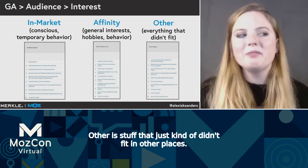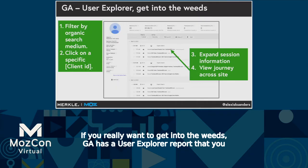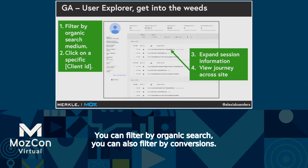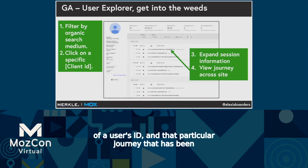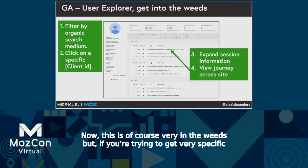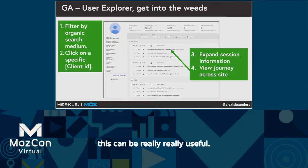'Other' is stuff that just kind of didn't fit in other places. If you really want to get into the weeds, GA has a User Explorer report that you can filter by organic search and also by conversions. You can go in and see the different steps of a user's journey that has been tagged by GA — you can literally follow them through a journey. This is very in the weeds, but if you're trying to get very specific or do illustrative user journey mappings, this can be really, really useful.